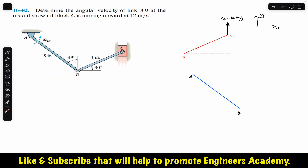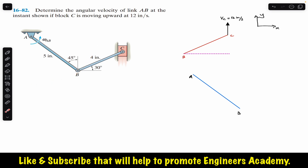The velocity of B will be perpendicular to the radius of that circle, and the radius of that circle is link AB. In other words, if a point is moving about a fixed point in a circular path, its velocity will always be perpendicular to the link representing the radius. So the velocity of B is perpendicular to link AB, and we show that on the free body diagram of link AB.